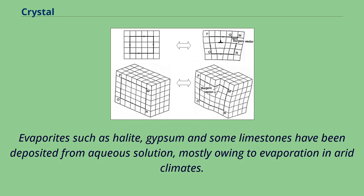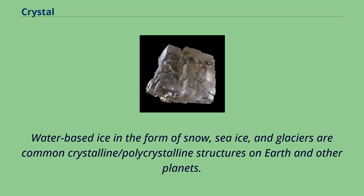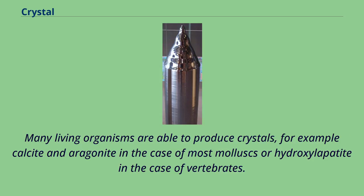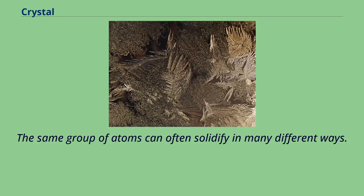Water-based ice in the form of snow, sea ice, and glaciers are common crystalline and polycrystalline structures on Earth and other planets. A single snowflake is a single crystal or a collection of crystals, while an ice cube is a polycrystal. Many living organisms are able to produce crystals — for example, calcite and aragonite in the case of most molluscs, or hydroxylapatite in the case of vertebrates. The same group of atoms can often solidify in many different ways. Polymorphism is the ability of a solid to exist in more than one crystal form.